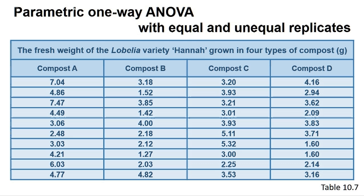There are two common parametric one-way ANOVA tests implemented by programs, and which one you use depends on whether the variances are similar or not. We can test if the variances are similar, also termed homogeneous, by doing an F-test first on the data using the program. See Chapter 10 in the book and Box 10.7 for further details.